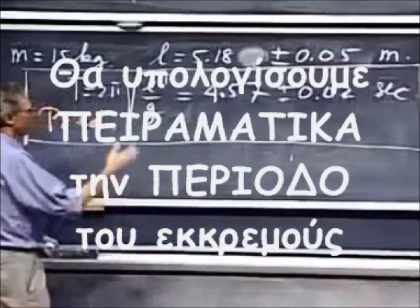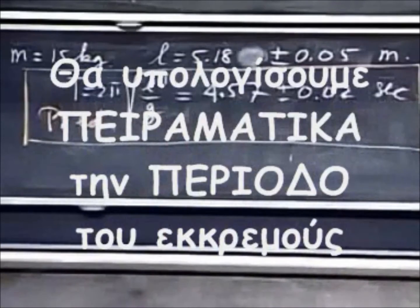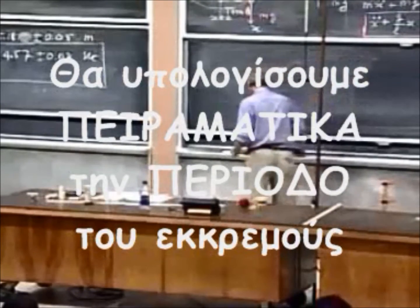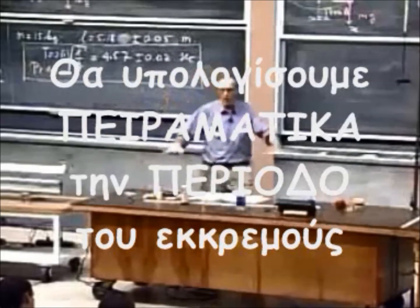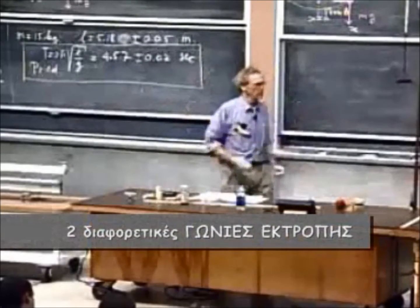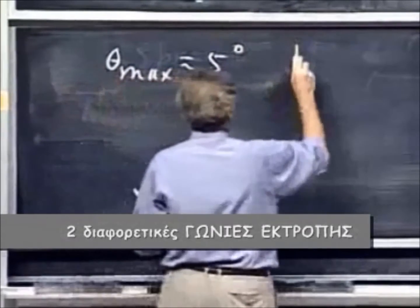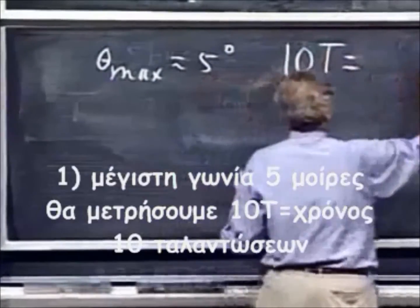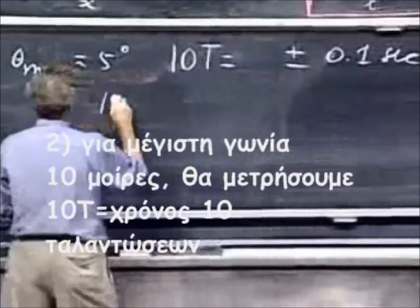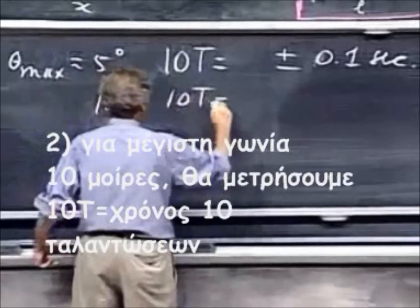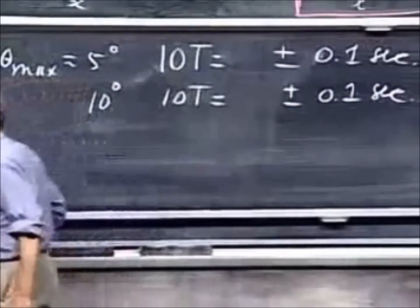Now I'm going to oscillate it for you and I'm going to do it from two different angles — at a five-degree angle and at a ten-degree angle. In order to get my relative error down, I will oscillate ten times. At theta maximum of roughly five degrees, I get ten T equals something plus or minus my reaction time, which is 0.1 of a second. And then I will do it from ten degrees again, and my reaction time is not much better than 0.1 seconds.